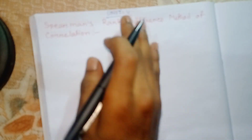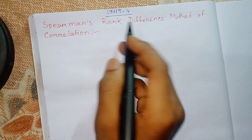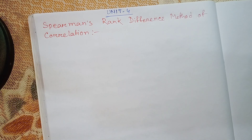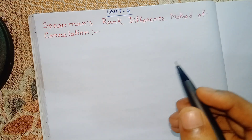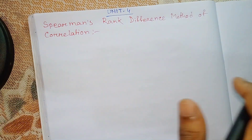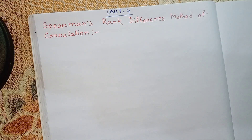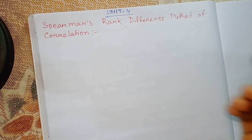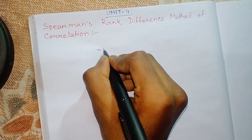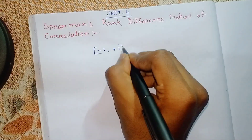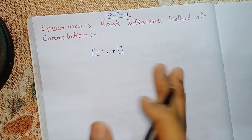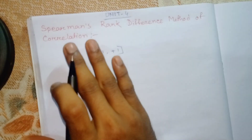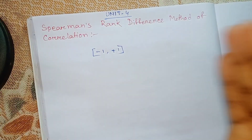Spearman unit 4, correlation. This is the Spearman Rank Difference Method of Correlation. It is also known as the product moment method of correlation. The relation gives the same result — the rank difference method and the moment method of correlation.